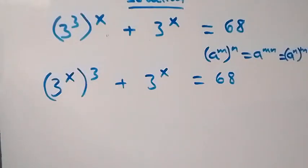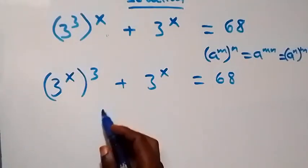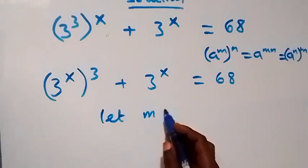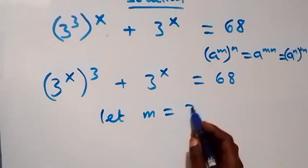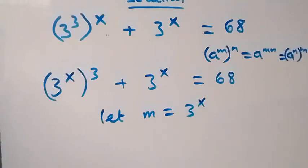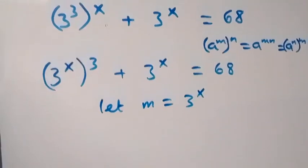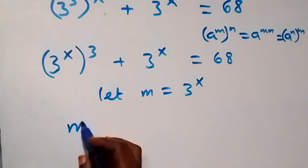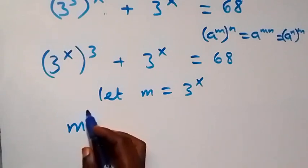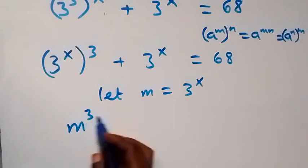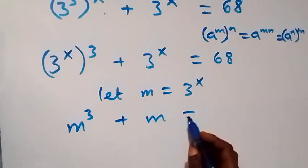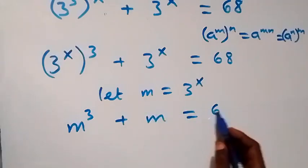Here we have 3 raised to power x common. Let m equal 3 raised to power x. Then this equation becomes m raised to power 3 plus m equals 68.